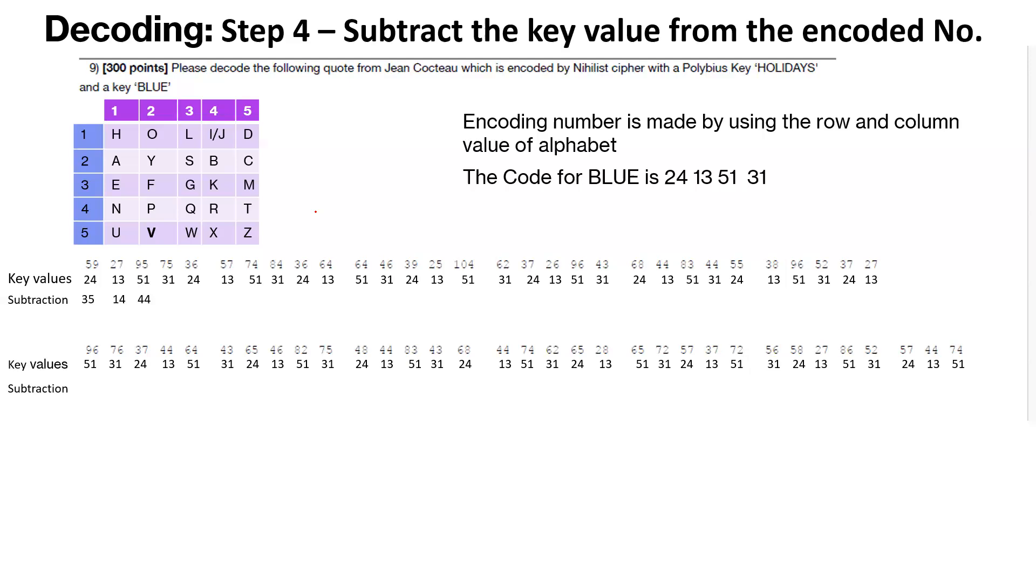And we continue doing this for the whole of the first row and the second row. If you're doing this along with me, I think that would give you more value. So we would go ahead and put your subtraction values along the way. And then we will check those values.